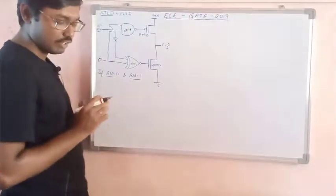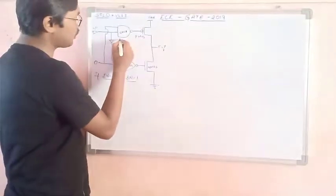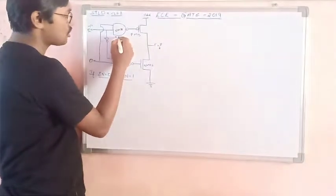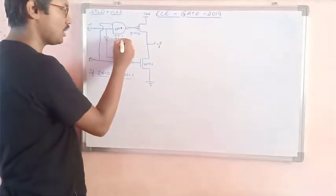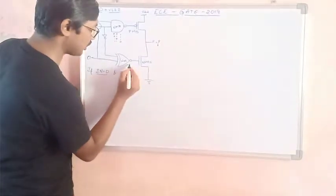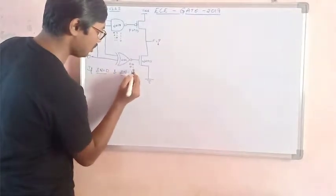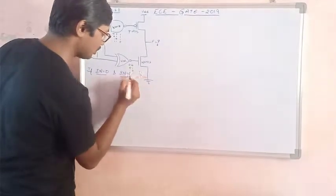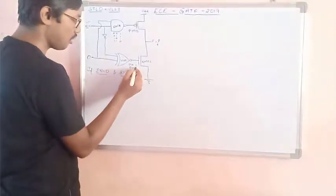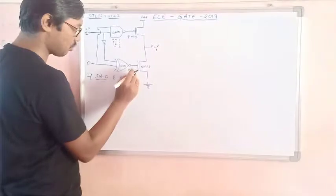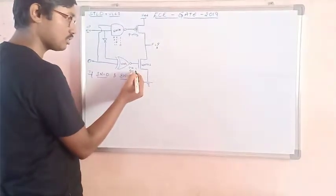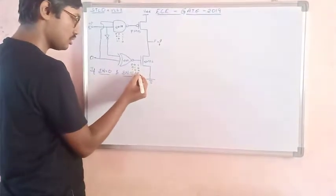So whenever you solve this you need to write your truth table: 0 0, 0 1, 1 0, 1 1. For NAND: 0 0 gives 1, 0 1 gives 1, 1 0 gives 1, 1 1 gives 0. For NOR: 0 plus 0 is 0 so output is 1; 1 plus 0 is 1 so output is 0; 0 plus 1 is 1 so output is 0; 1 plus 1 is 1 so output is 0.